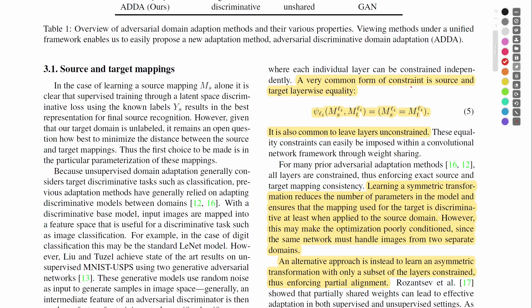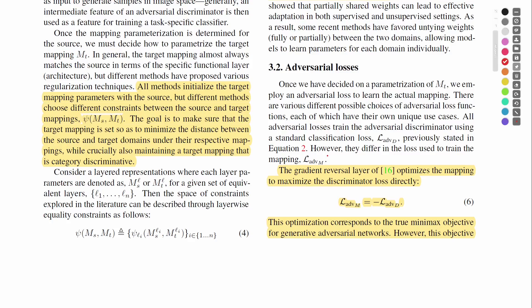There are different ways to constrain the mappings. A very common form is to make each layer equal, but it is also common to leave the layers unconstrained. The authors argue that making the layers symmetric makes the optimization poorly conditioned since the same network must handle images from both source and target domains. An alternative is to learn an asymmetric transformation with only a subset of layers constrained, thus enforcing a partial alignment.